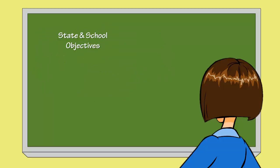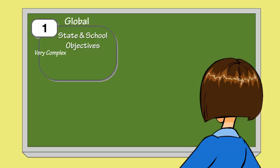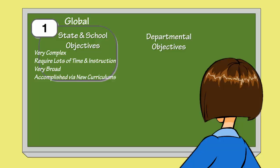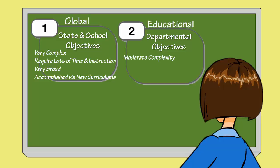If the state and school have mandated standards, we can consider those goals to be somewhat global. Goals like those of the state and school are likely very complex and will require lots of time and instruction to accomplish. These types of goals are very broad and can likely be accomplished through establishing new curriculums. Each department in Ms. Williams' school has also developed new programs. These types of goals may be considered educational in that they are moderate in complexity and may take weeks or months to complete. They are probably accomplished through the use of units.